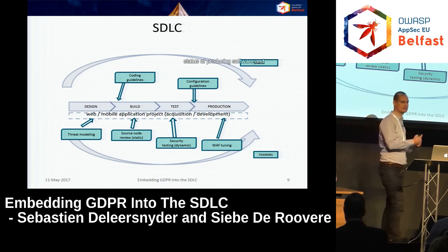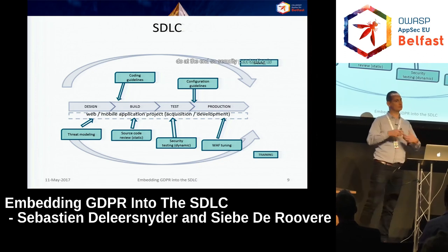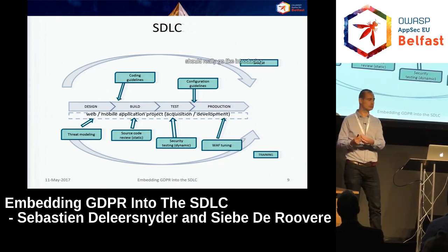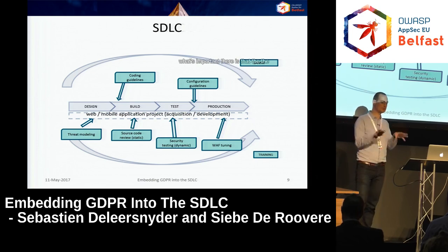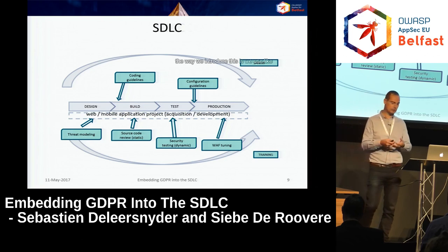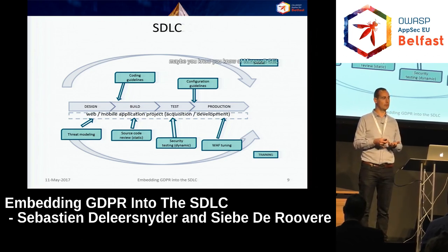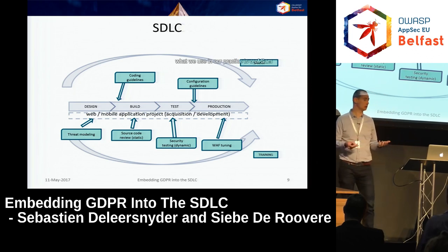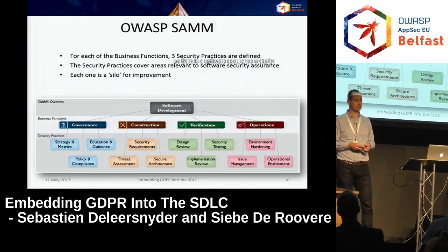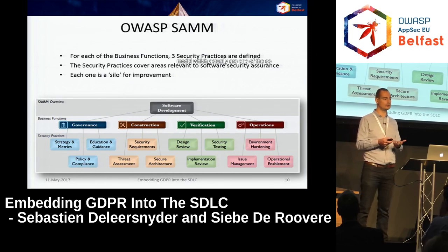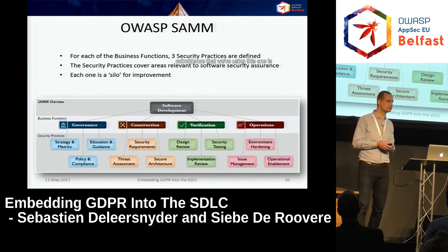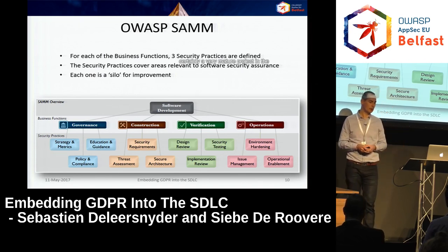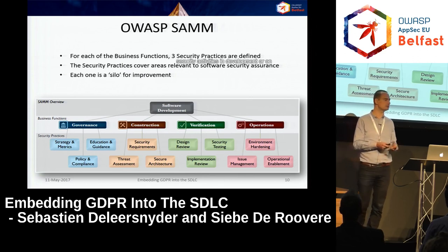Security pen testing is not the only thing you should be doing — you should introduce software security activities as early as possible in different iterations. It's important that people involved get training and awareness. The framework we use is OWASP SAMM — the Software Assurance Maturity Model — which is one of the co-projects I lead. It's a mature project used by many organizations to introduce software security activities into the development lifecycle.